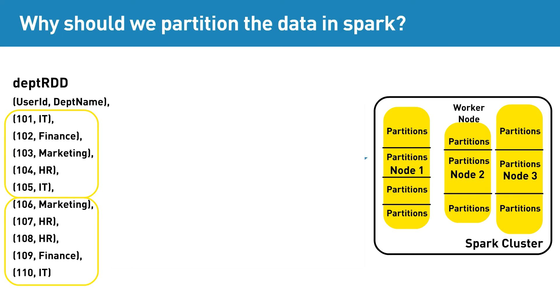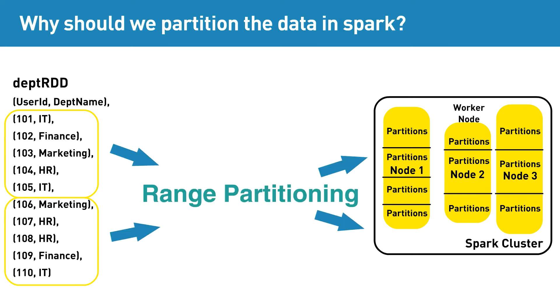Range partitioning: when the keys are sorted and non-negative, we can partition the dataset based on the range, which is called range partitioning. Here, keys belonging to a specific range will appear in a specific node.